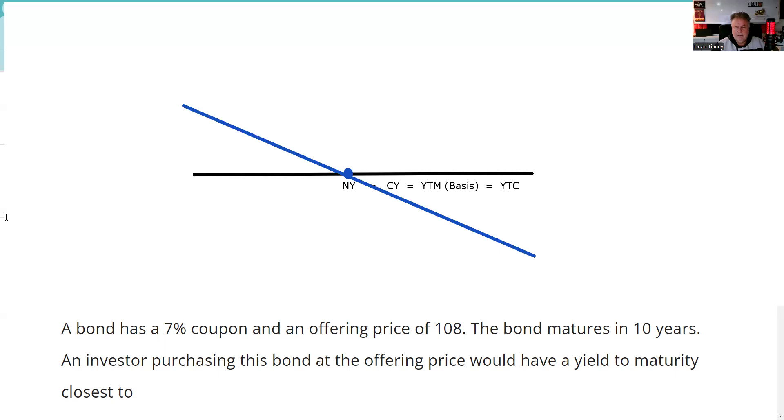Okay. So I know that the yield to maturity basis, that's the fancy word for yield to maturity, has to be something less than seven. So I can eliminate from the answer set anything that isn't less than seven.